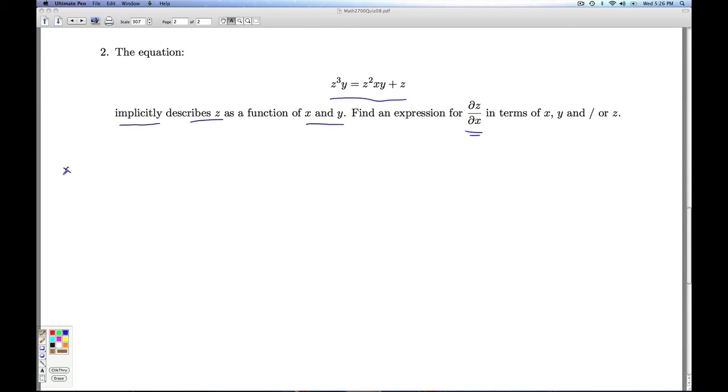And so we have the following fact. If F(x, y, z) equals 0 describes z as a function of x and y, then the partial derivative of z with respect to x can be obtained by taking the opposite of the partial derivative of F with respect to x divided by the partial derivative of F with respect to z. So that's the theorem we're going to use. In order to use this theorem, we need to first identify what capital F is. And so to that end, what we need to do is we need to get this into an equation that's set equal to 0. So that's step 1.